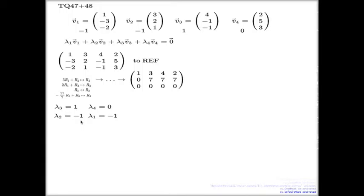We know how to answer that - that's where the techniques from the first semester come in. How do we answer the question of whether a homogeneous system of linear equations has a unique trivial solution or many non-trivial solutions? We need to take the matrix to the row echelon form and see how many pivots we have. That's what the first semester tells us.